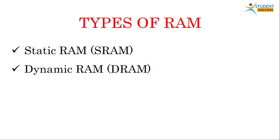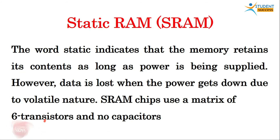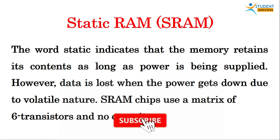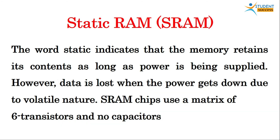Types of RAM are SRAM and DRAM — Static RAM and Dynamic RAM. Static RAM: the word static indicates that the memory retains its contents as long as power is being supplied. Data is lost when the power goes off due to its volatile nature. SRAM chips use a matrix of six transistors and no capacitors.